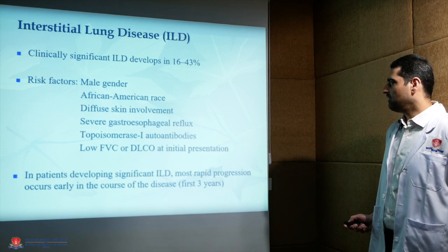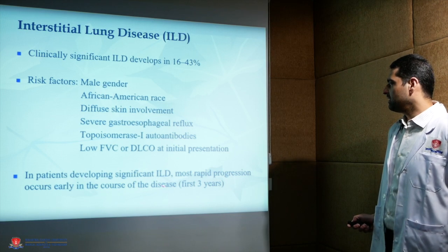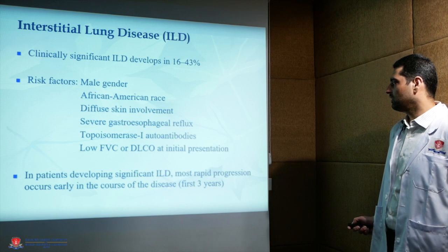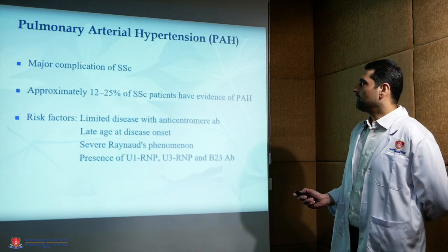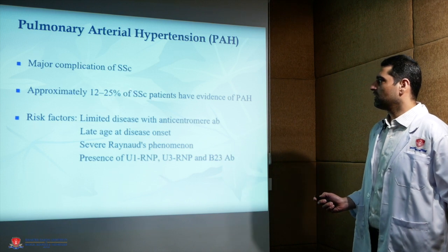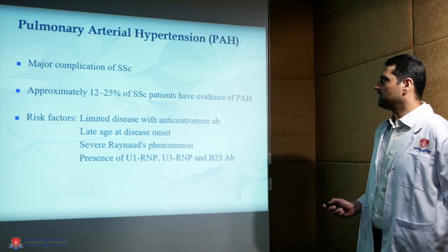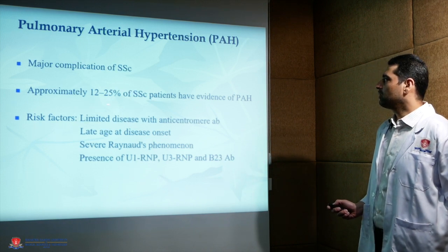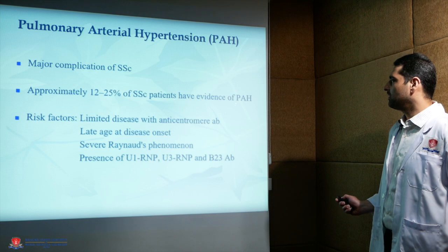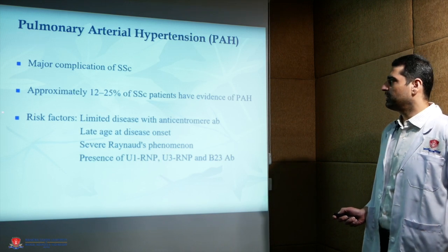In patients developing significant interstitial lung disease, the most rapid progression occurs early in the course, within the first 3 years. Pulmonary arterial hypertension is a major complication of systemic sclerosis, with approximately 12–25% of patients showing evidence of it.